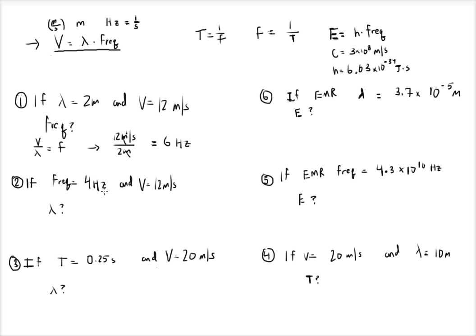Now if I give you frequency and velocity and ask for wavelength, you have to get wavelength by itself. Divide both sides of the equation by frequency, and you get velocity divided by frequency equals wavelength. So it'll be 12 meters per second divided by 4 Hertz. Remember that Hertz are 1 over seconds. Rewriting it that way, the per-second part of 12 meters per second cancels with the 1 over second, leaving you with 3 meters.